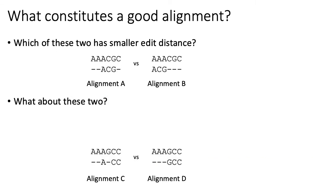If you measure alignment quality by the number of matches or mismatches, this often works well. Looking at the top part of this slide, alignment A versus alignment B give two different possible alignments. Intuitively, alignment A is better because, with the same number of gaps, alignment A gives three matches whereas alignment B gives only one.